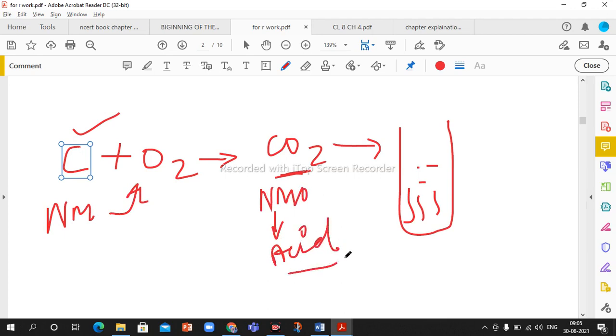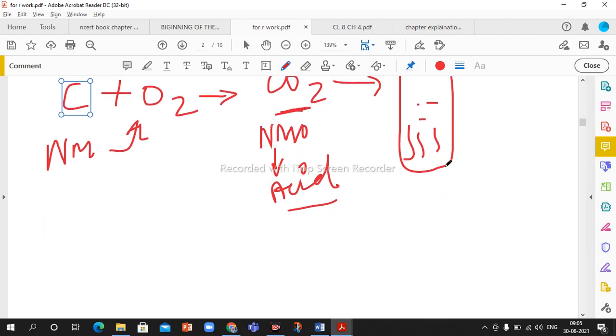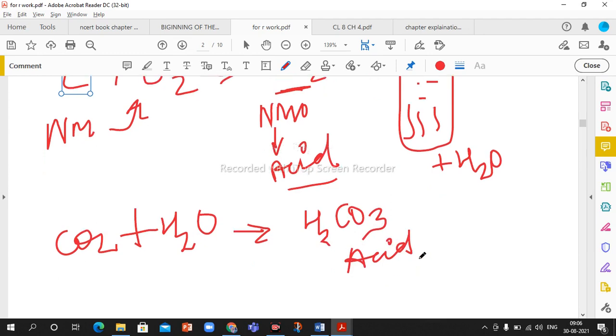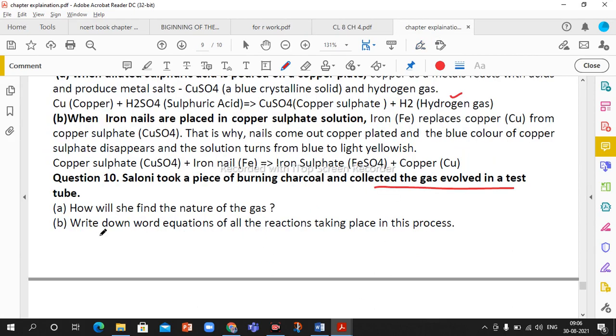This gas, we will add water. Carbon dioxide and water will form carbonic acid. Carbonic acid will change the blue litmus paper to red. So we realize that the gas formed has acidic nature.